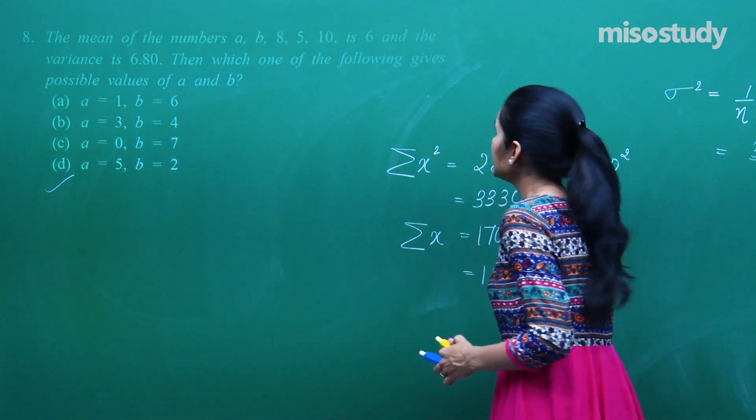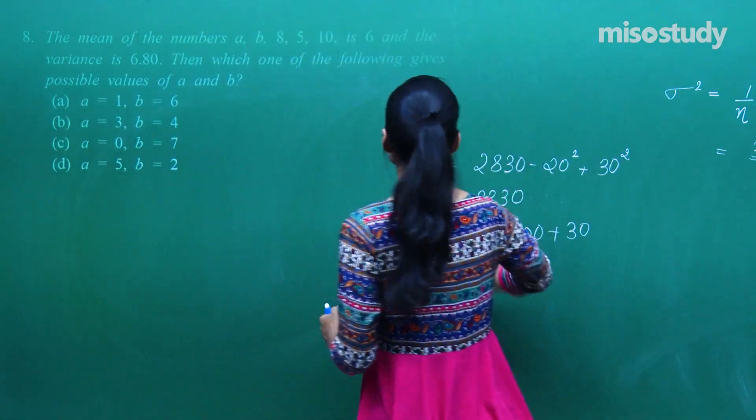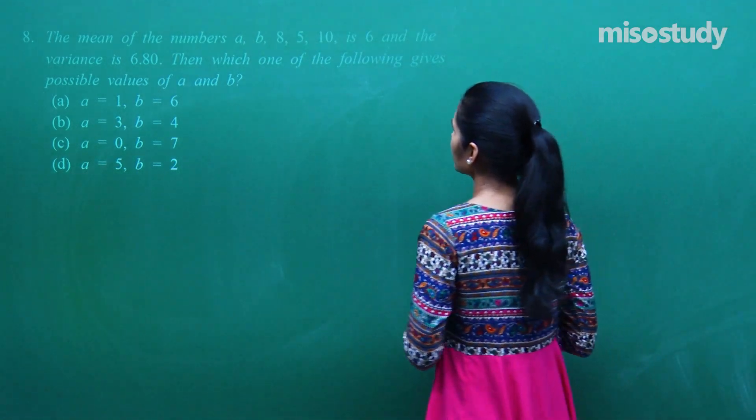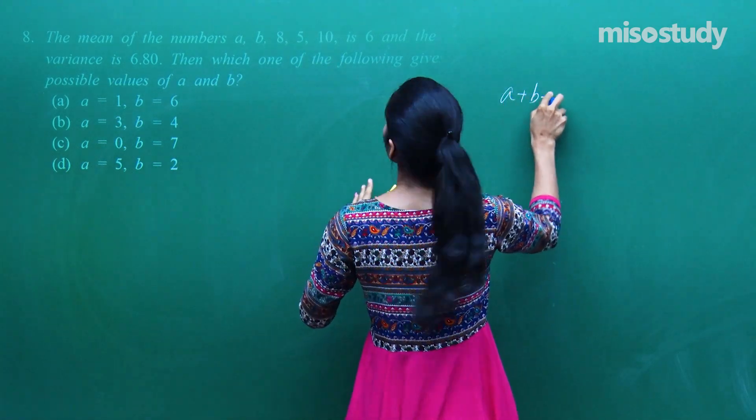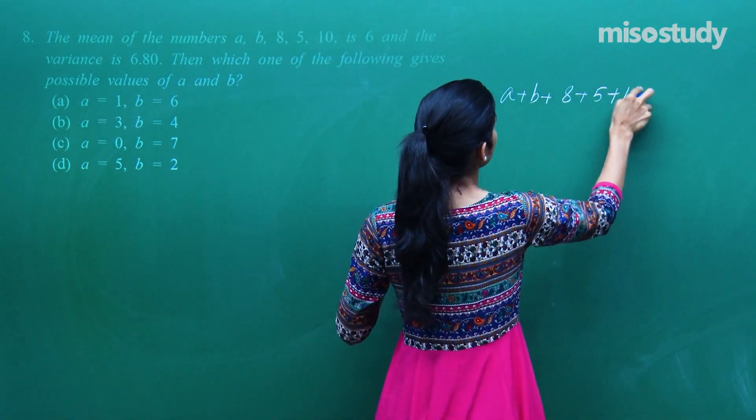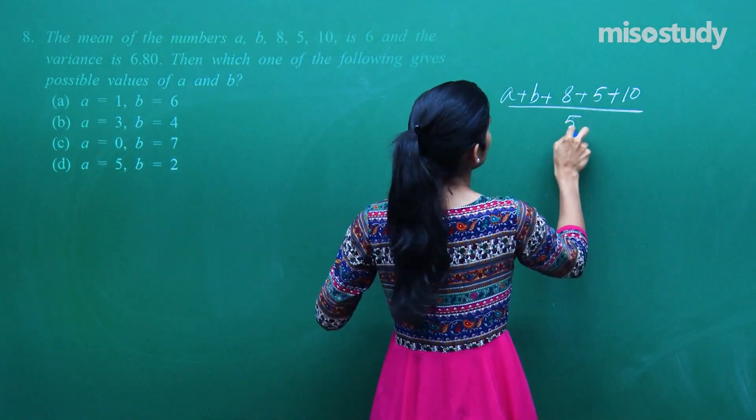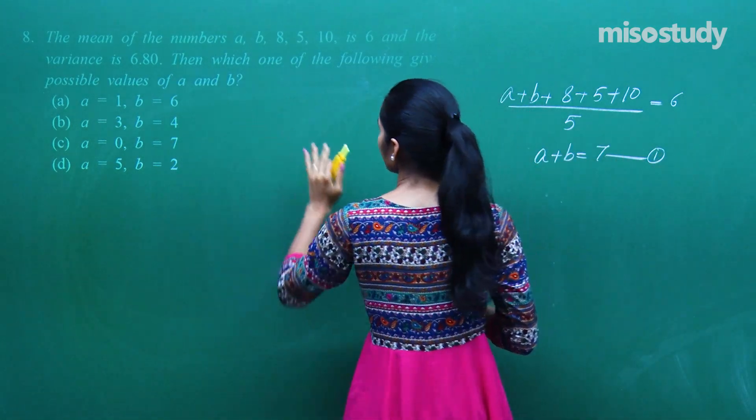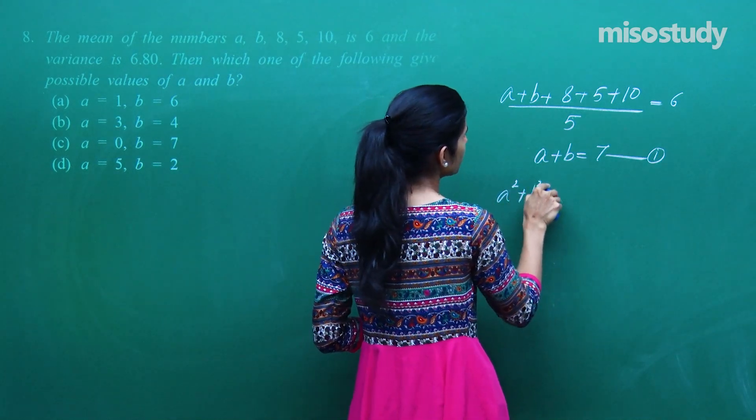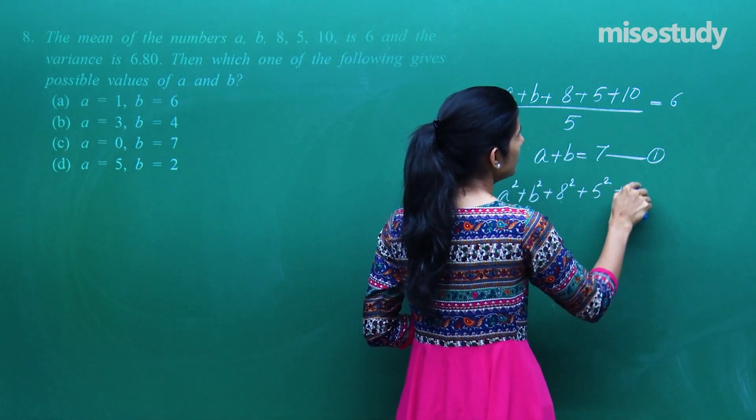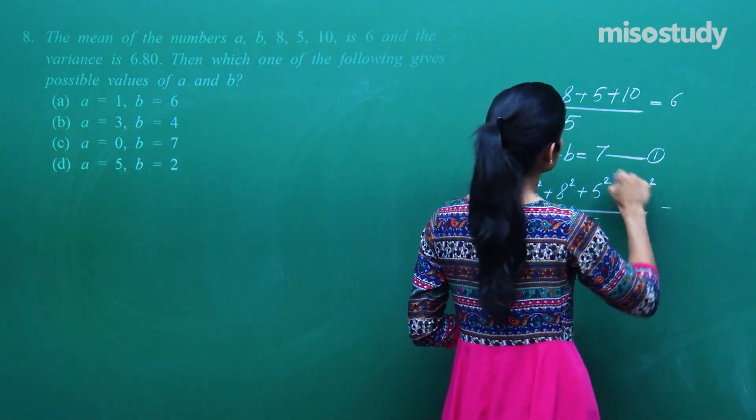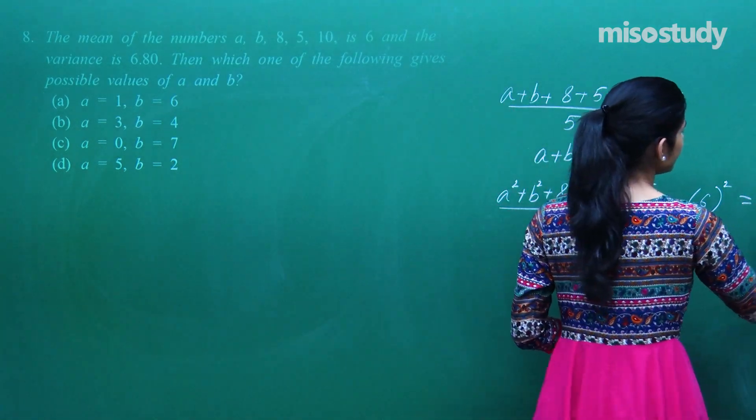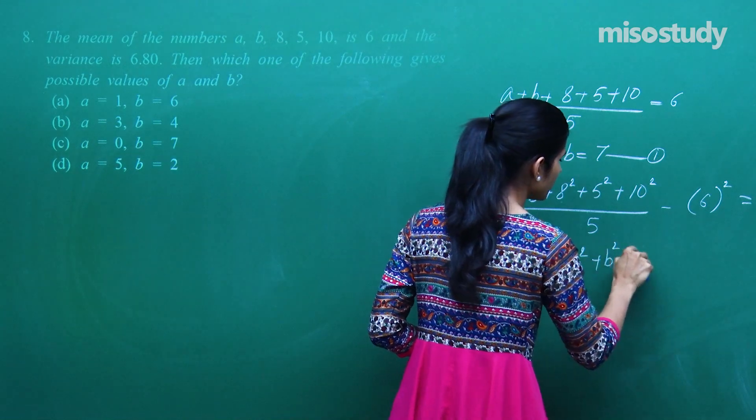The mean of these numbers is 6 and variance is 6.80, in which of the following gives the possible values of a and b. Dhyan se dekho agar mean iska 6 hai that means a plus b plus 8 plus 5 plus 10 upon 5 is 6. Isko resolve karenge aapke paas aayega a plus b is 7 and variance is given as 6.80. Matlab a square plus b square plus 8 square plus 5 square plus 10 square upon 5 minus mean ka square. Mean toh 6 hai. 6 ka square minus kya to aaya 6.80.